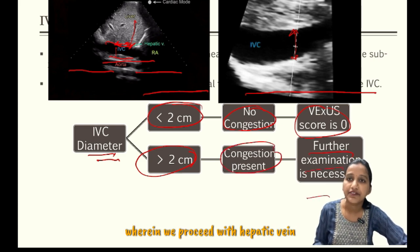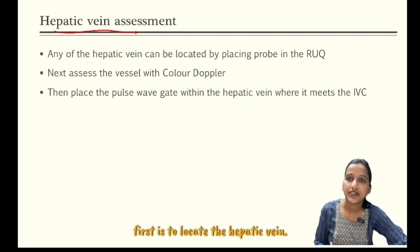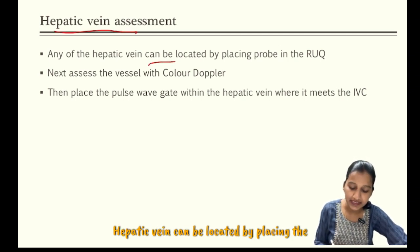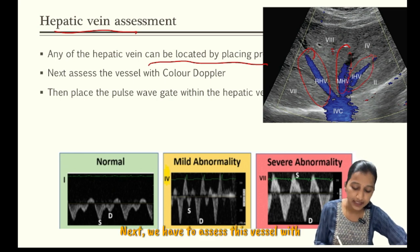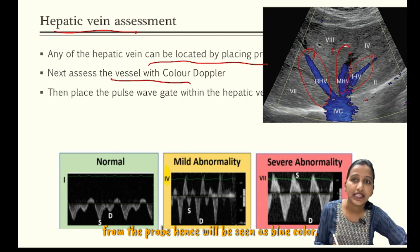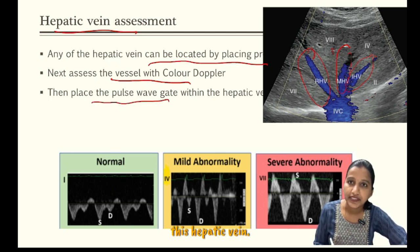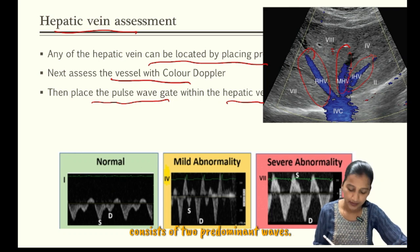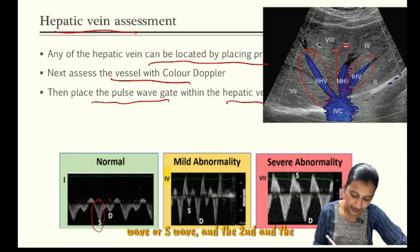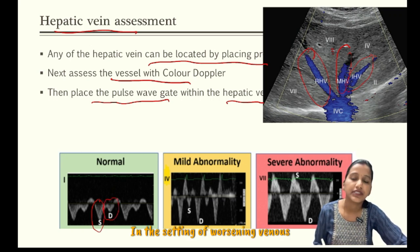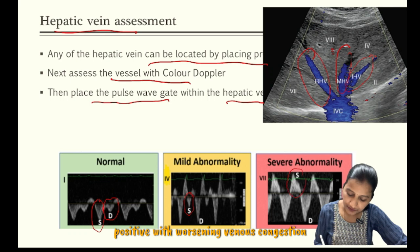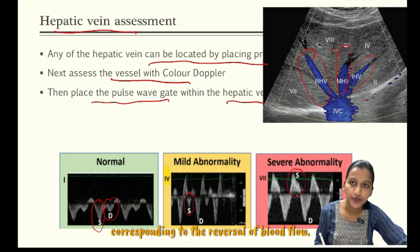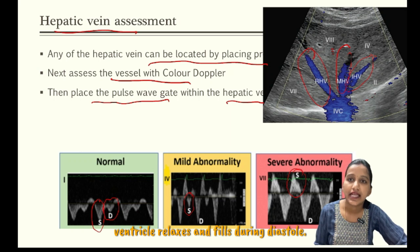Next, coming to hepatic vein assessment — the hepatic vein can be located by placing the probe in the right upper quadrant, wherein any of the hepatic veins can be chosen. We assess this vessel with color Doppler wherein the flow will be away from the probe and hence will be seen as blue color. Then place the pulse wave Doppler gate over the hepatic vein. This physiologic waveform consists of two predominant waves: the first and larger wave is the systolic wave or S wave, and the second and smaller one is the diastolic or D wave. In the setting of worsening venous congestion, the magnitude of the S wave will decrease as systolic phase venous flow decreases and eventually will become positive with worsening venous congestion, corresponding to the reversal of blood flow. At this point, venous congestion is severe enough that flow will be away from the IVC and forward flow will only occur as the ventricle relaxes and fills during diastole.